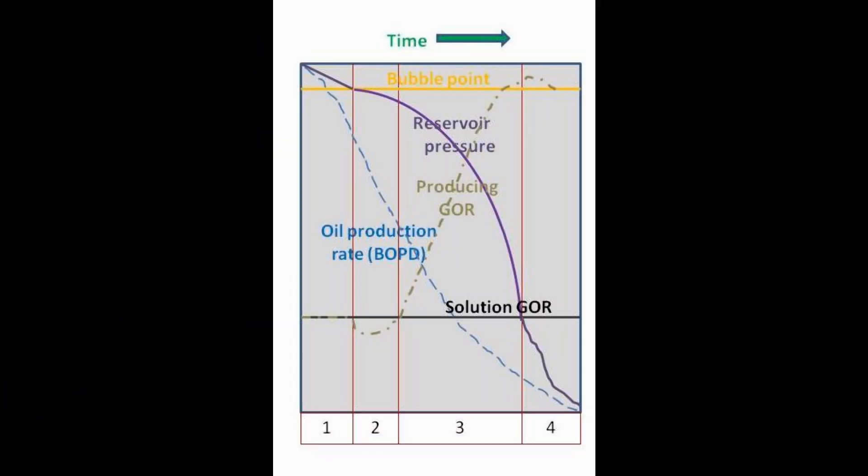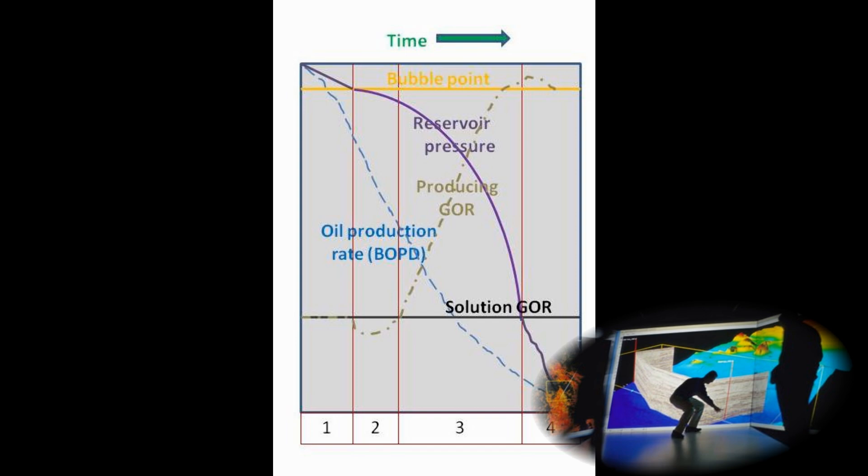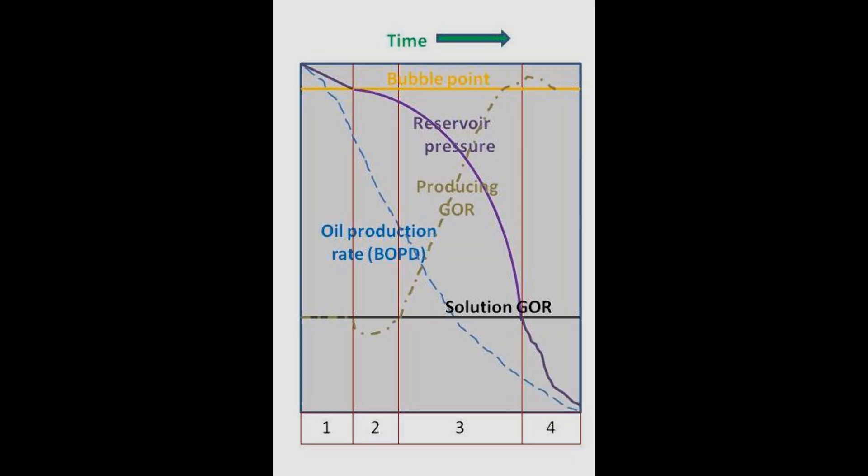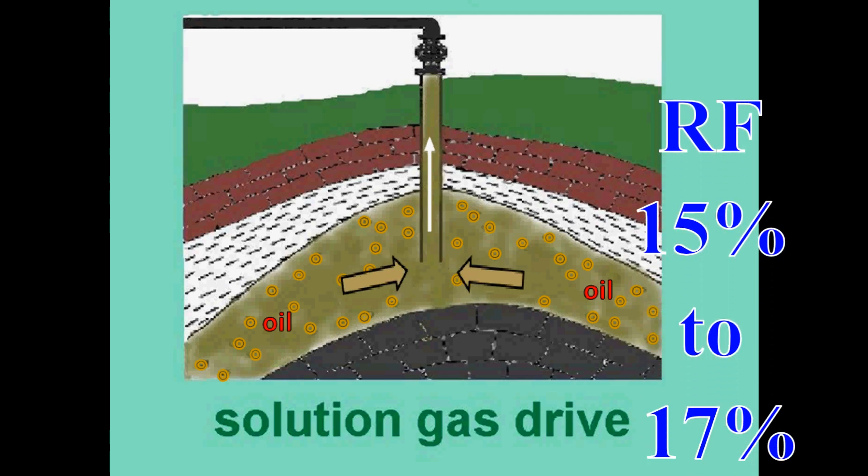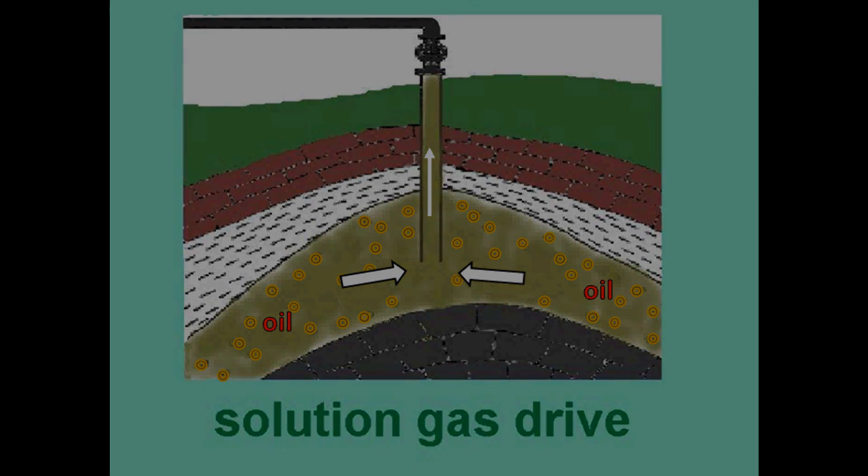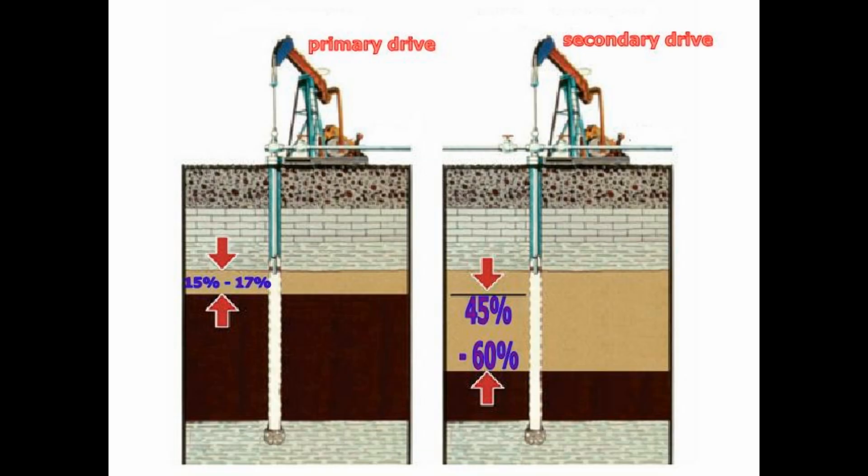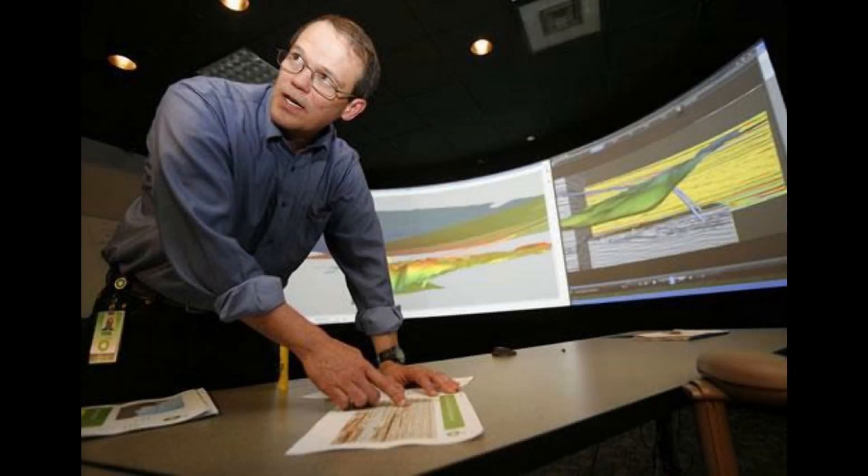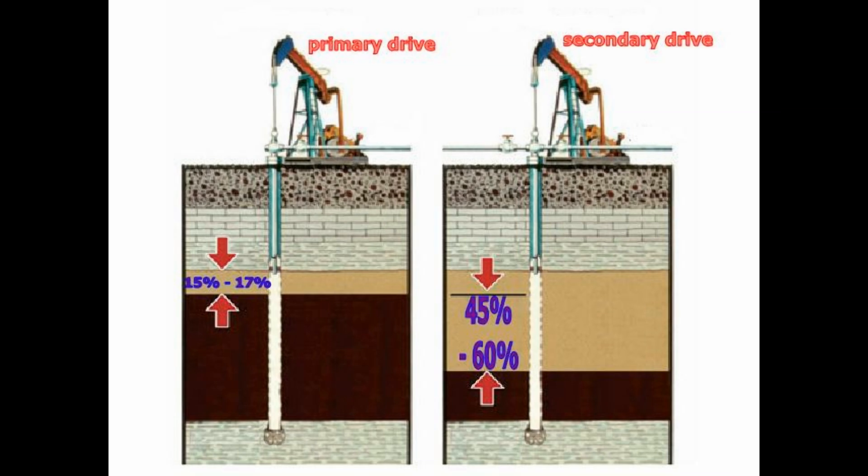As you can see in these four stages of a solution gas drive, oil production, reservoir pressure, and the gas oil ratio all show characteristic changes that can be used to predict the next phase so that the reservoir can be efficiently managed. Because the recovery factor in the reservoir for a solution gas drive is usually between 15 to 17 percent, as I mentioned earlier, solution gas drive reservoirs usually need a secondary recovery method. Being able to anticipate the different phases helps the engineer decide on when to begin preparations for a secondary recovery.